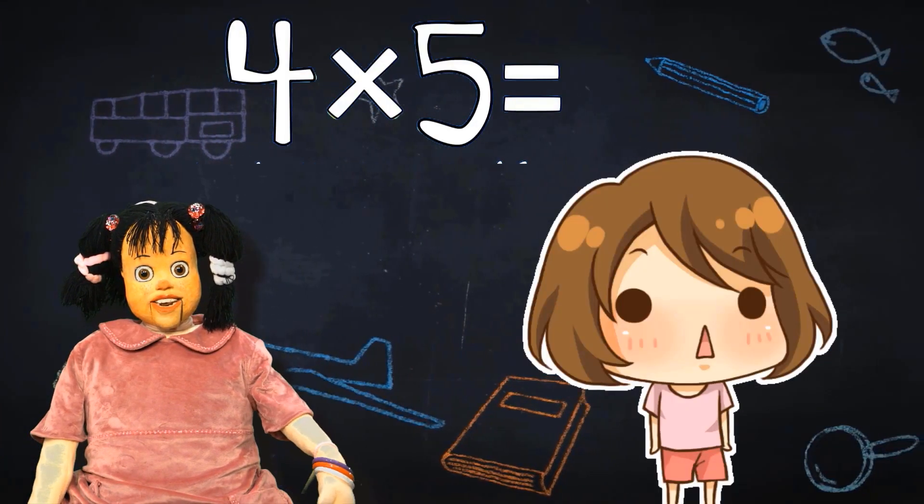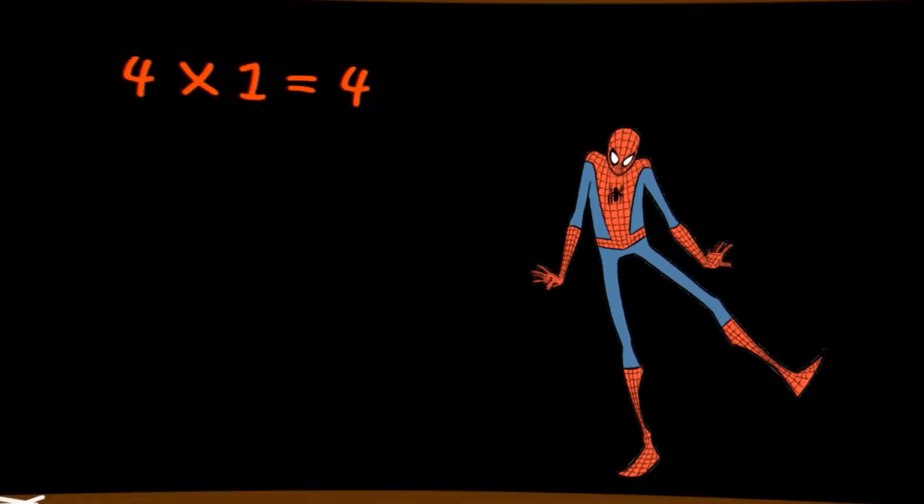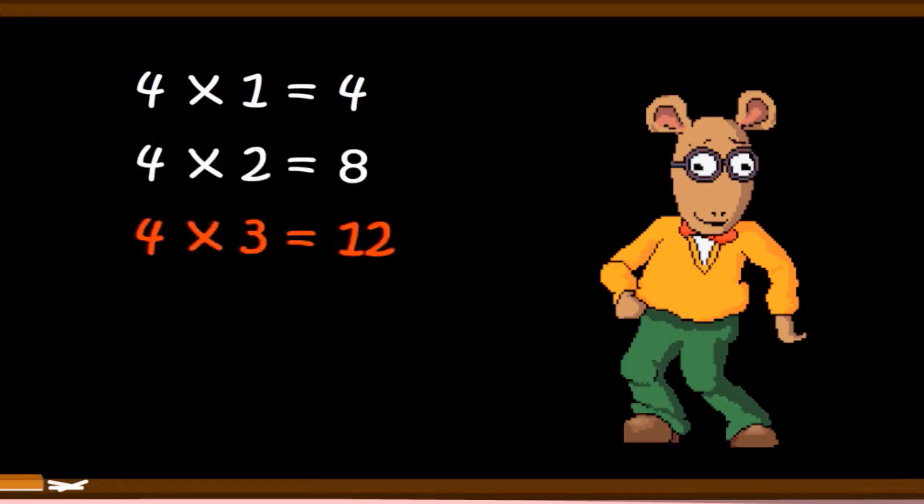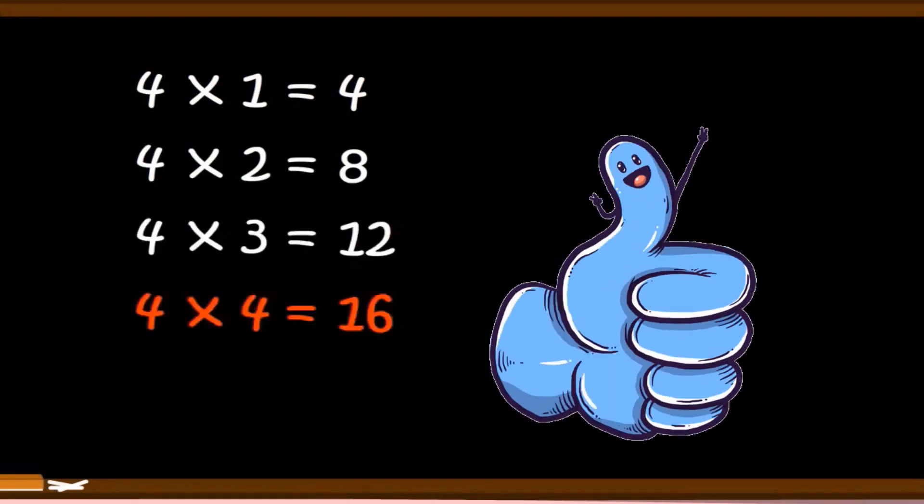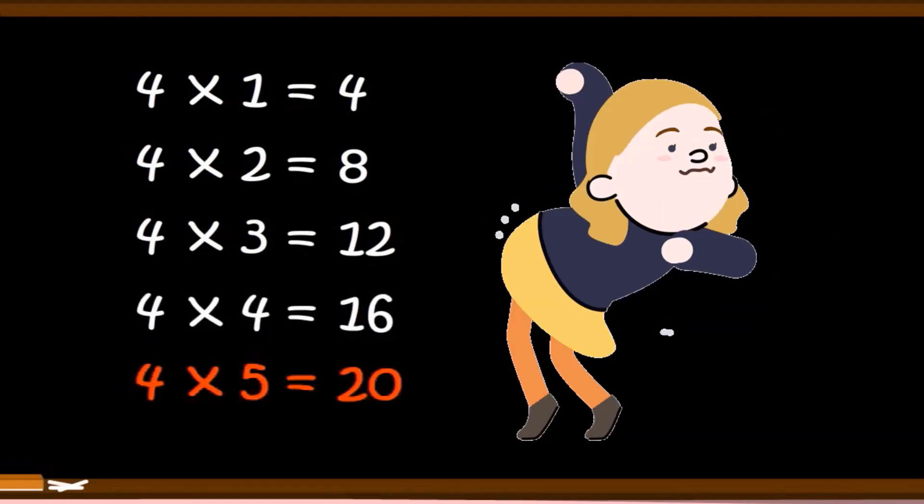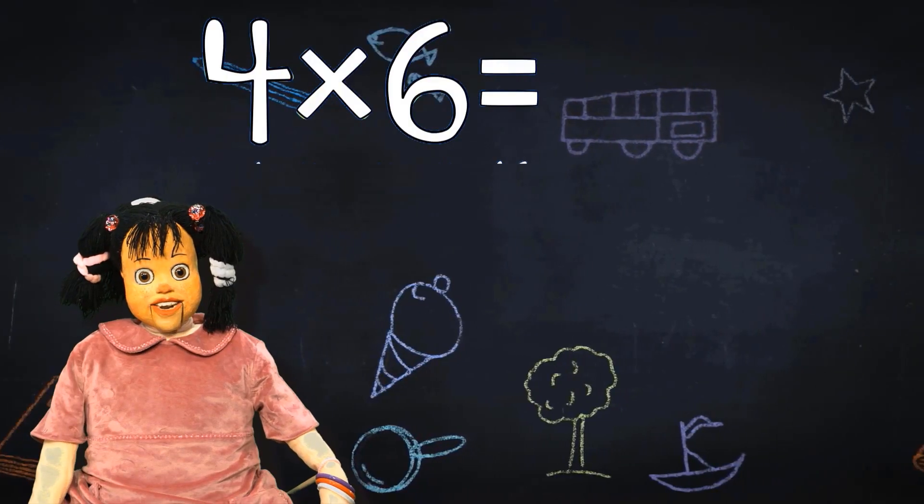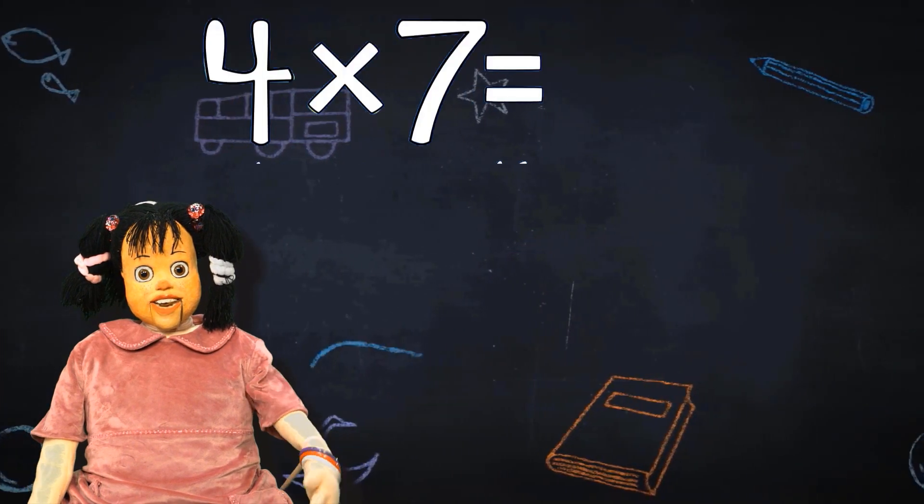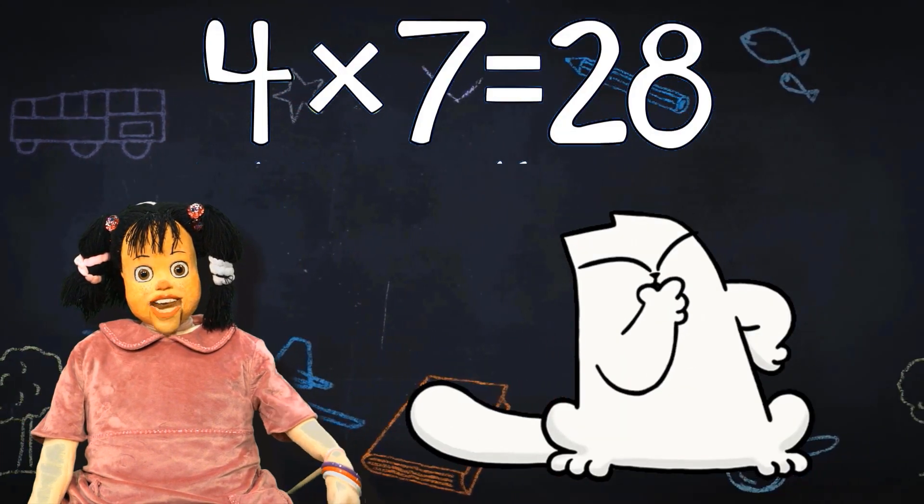4 times 5 equals 20. 4 times 6 equals 24, kardeşinin üstünü ört. 4 times 7 equals 28, hey gera siz misiniz?